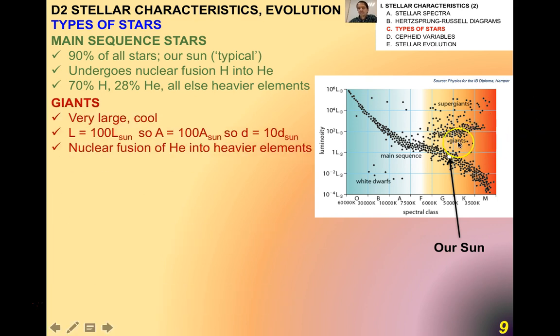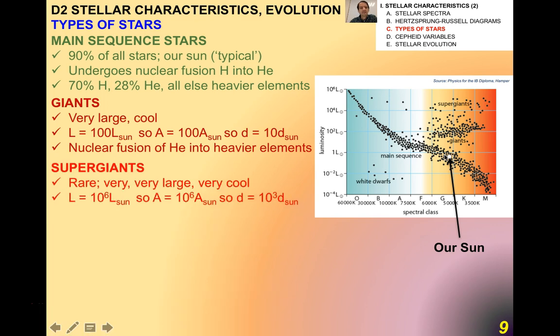The giants, which are up in here to the right of the main sequence, are very large and cool. Their luminosities are about 100 times the luminosity of our sun, and the diameter tends to be about 10 times the diameter of the sun. In these stars, nuclear fusion of helium converts helium into heavier elements.